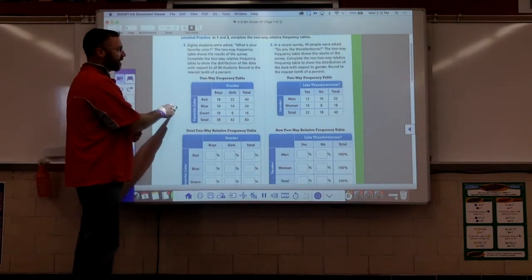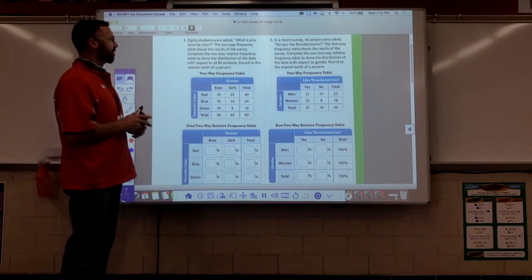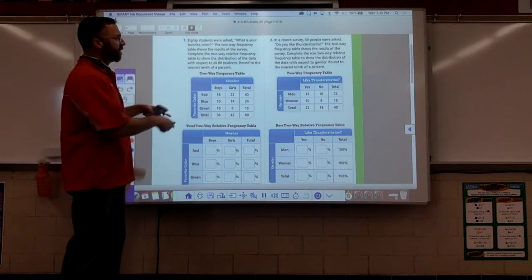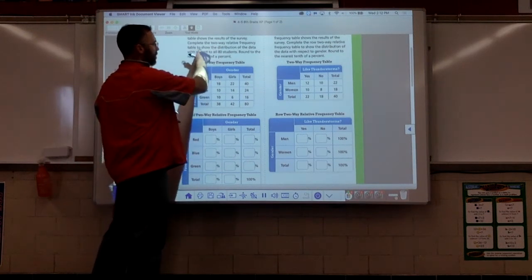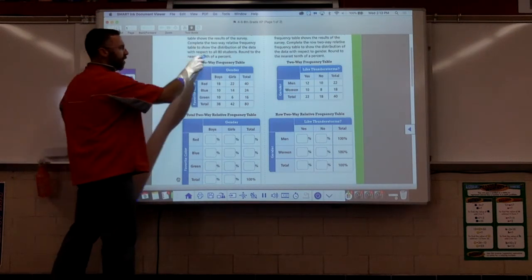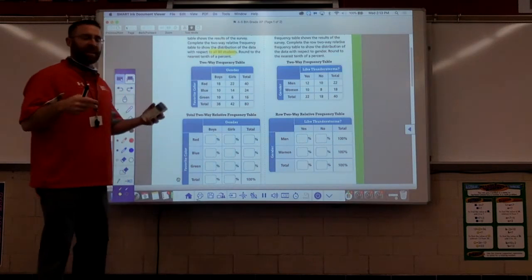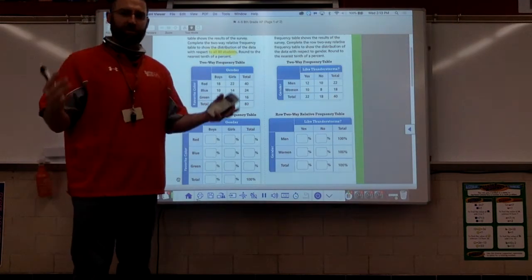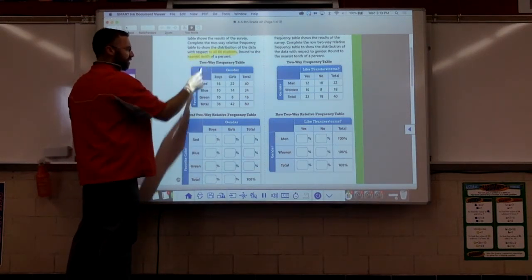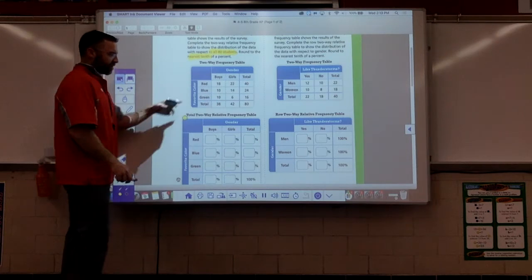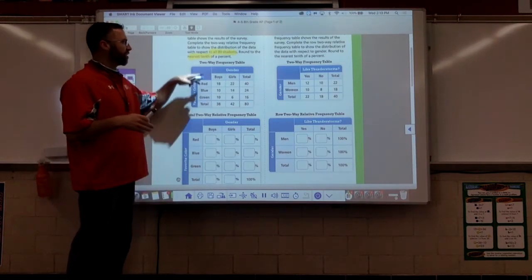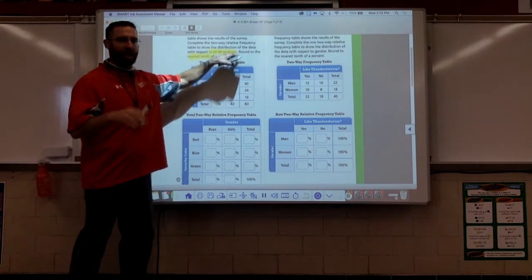If we look at number one, 80 students were asked what is your favorite color. The two-way frequency table shows the results of the survey. Complete the two-way relative frequency to show the total distribution of the data to all 80 students. That's going to tell us we're making a total frequency table because it's saying to do it to all of them, round to the nearest tenth of a percent. We're comparing everything to the total because it says compare it to all 80 students.